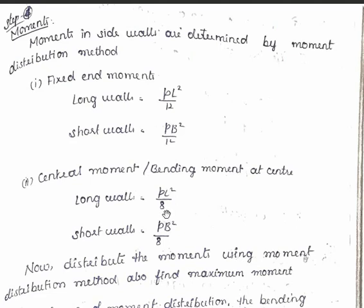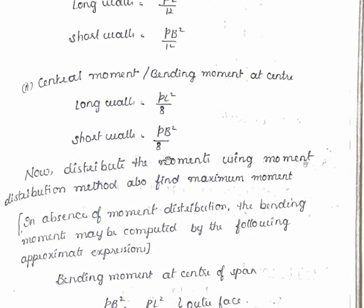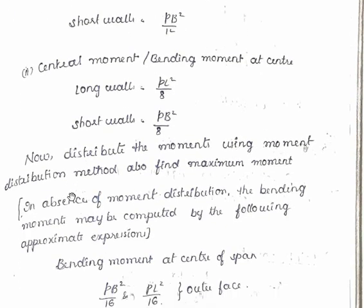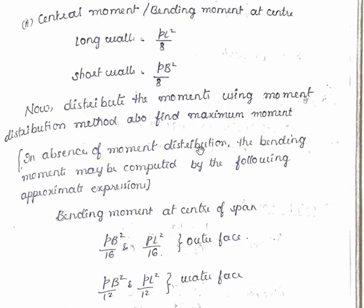So what is that? wl²/8, right? So for long walls it can be taken as P, that is water intensity, L²/8. For short walls it is Pb²/8. Now distribute the moments using the moment distribution method and also find the maximum moment. See here it is an important point.